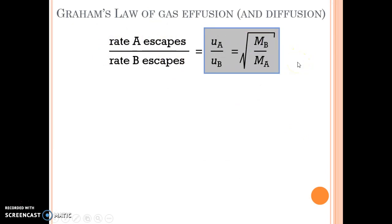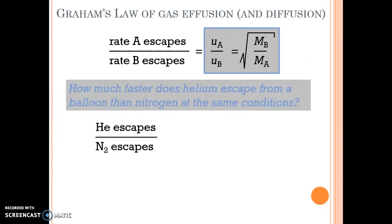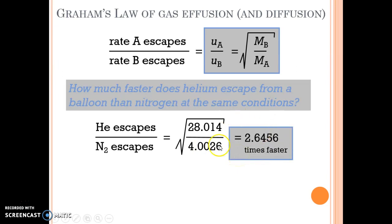How much faster is the helium going to escape? Helium escaping divided by nitrogen escaping—you've got the molar mass of nitrogen on top, molar mass of helium on the bottom. Helium is going to escape over two and a half times faster than nitrogen because of their difference in molar masses. For effusion, this is referred to as Graham's Law of Effusion, and this works perfectly well when molecules move through a wall or surface.